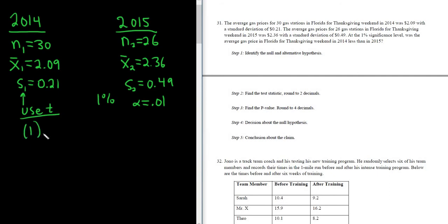So step 1, let me use a different color just to mix it up. Step 1 is to identify the null and alternative hypotheses. So this will be H0, that's the null hypothesis, and H1 is the alternate hypothesis. Whenever you're doing a hypothesis test for two means, H sub 0 is always the same. It's always mu 1 equals mu 2, no matter what. It's always that whenever it's two means. If it's two proportions, it's P1 equals P2. So we want to know if the average gas price in Florida in 2014 is less than 2015. So 2014, that would be mu 1, so mu 1 less than mu 2.